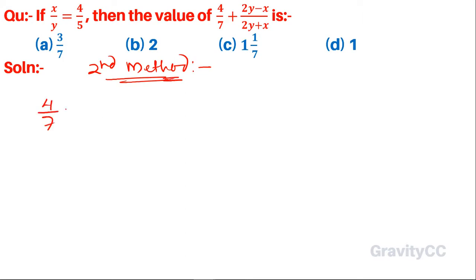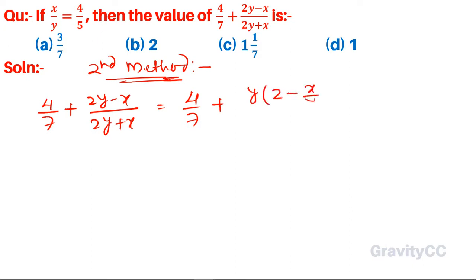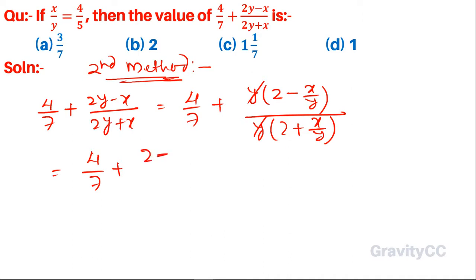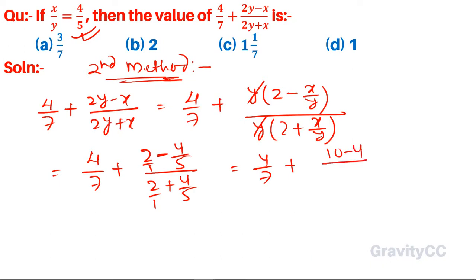In the second method, we take 4 upon 7 plus (2y minus x) upon (2y plus x) and divide numerator and denominator by y. The y's cancel, giving 4 upon 7 plus (2 minus x/y) upon (2 plus x/y). Substituting x upon y equals 4 upon 5, we get 4 upon 7 plus (10 minus 4) upon (10 plus 4), which simplifies to 4 upon 7 plus 6 upon 14, giving the same answer of 1.